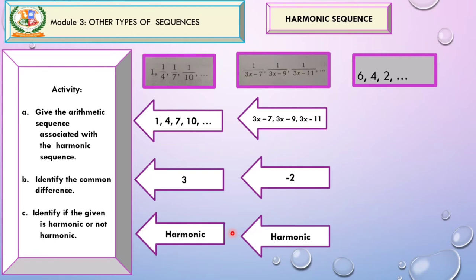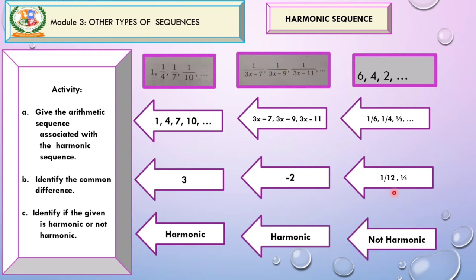For our third example, we have the sequence 6, 4, 2, and so on. So first, you have to identify the reciprocal. The reciprocal of 6 is 1 over 6. 4 is 1 fourth. 2, 1 half, and so on. Let us now identify the common difference. So just subtract. 1 fourth minus 1 sixth, that is 1 over 12. And 1 half minus 1 fourth is 1 fourth. Now look at your difference. Is there a common difference? We have two common difference in the given. 1 over 12 and 1 fourth. So meaning to say, we do not have a common difference, and therefore, our example is not harmonic.